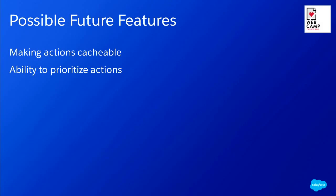A couple of things we're looking to implement going forward: one is caching data from requests — flagging an action so it checks locally before making a trip to the server, all transparent to the developer through the API. The other is prioritizing actions — we can do full delay with caboose or send them all at once, but we don't yet have a way to mark a very important action to bypass the event lifecycle and send immediately.